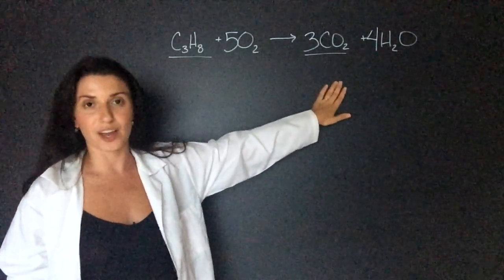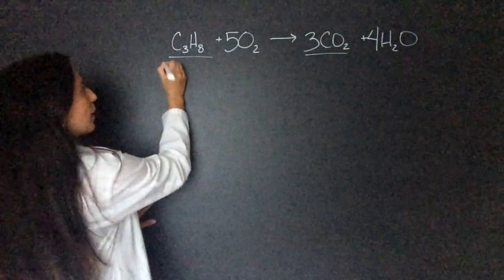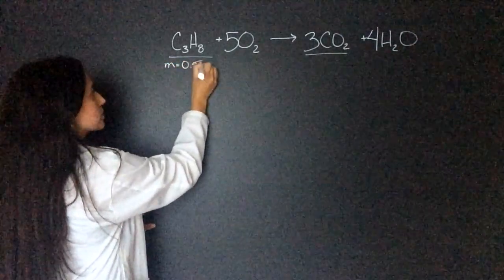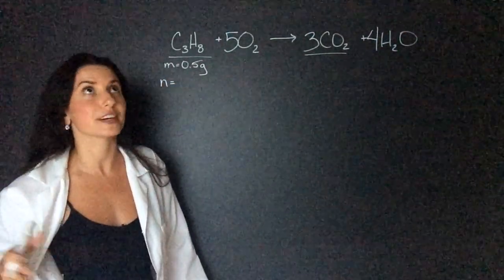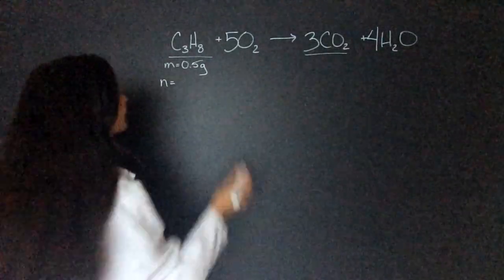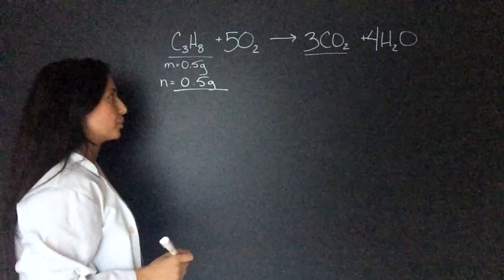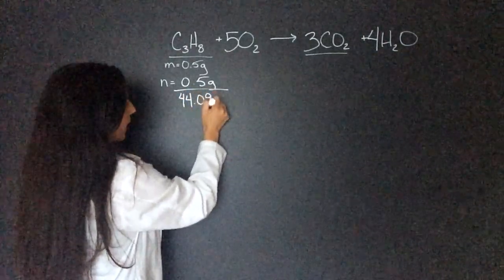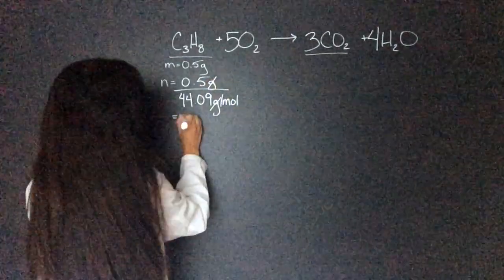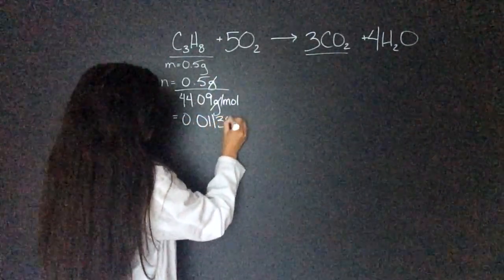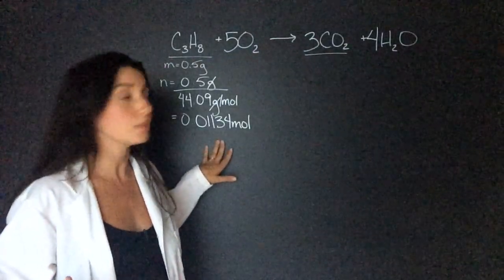So what we'll do is calculate the moles of propane. The question said that we had a mass of 0.5 grams of propane, so let's find the moles. We have moles equals mass over molar mass, and if you forget that go watch my video on moles and molar mass. 0.5 grams divided by the molar mass of propane, I calculated this to be 44.09 grams per mole. The grams cancel out and we have 0.01134 mole. So that's the moles of propane in the experiment.